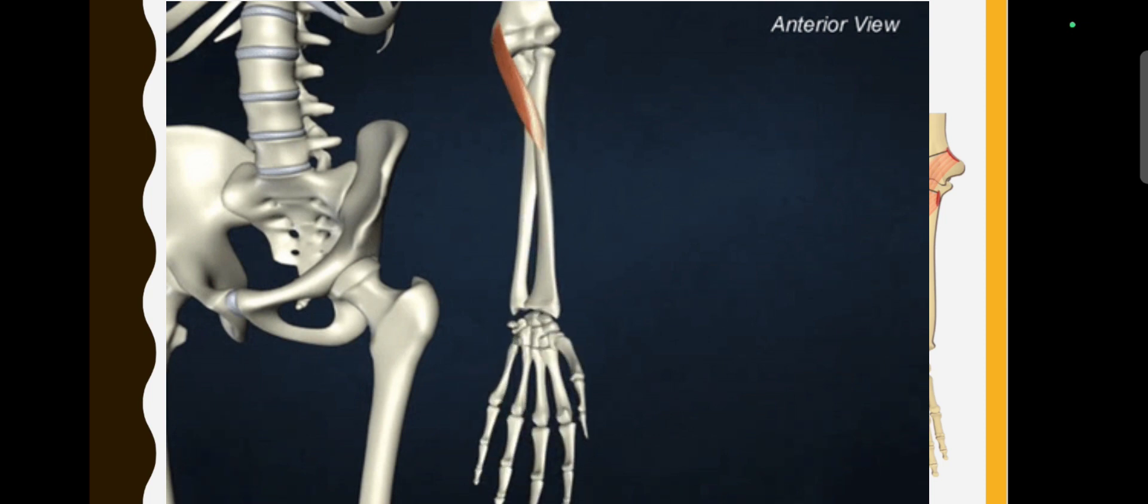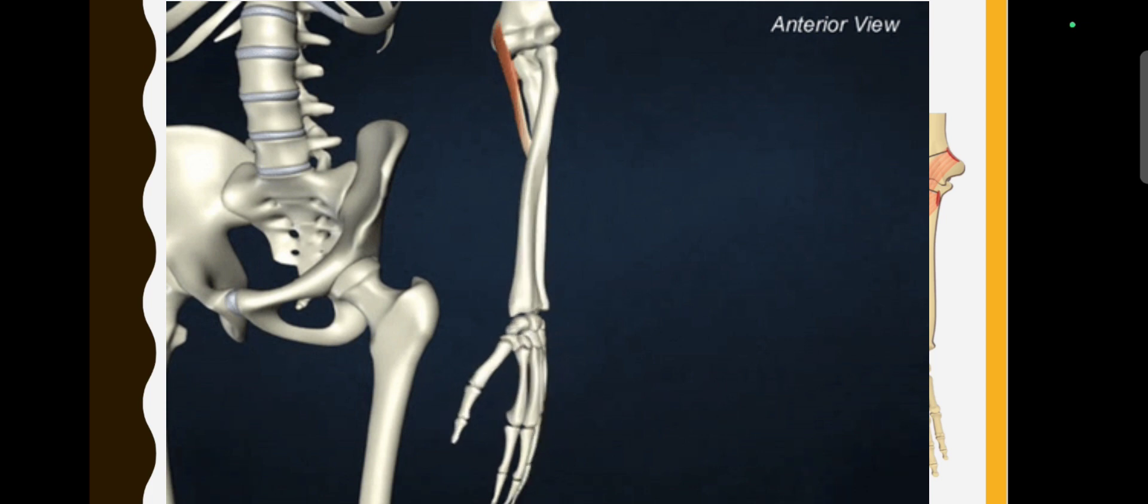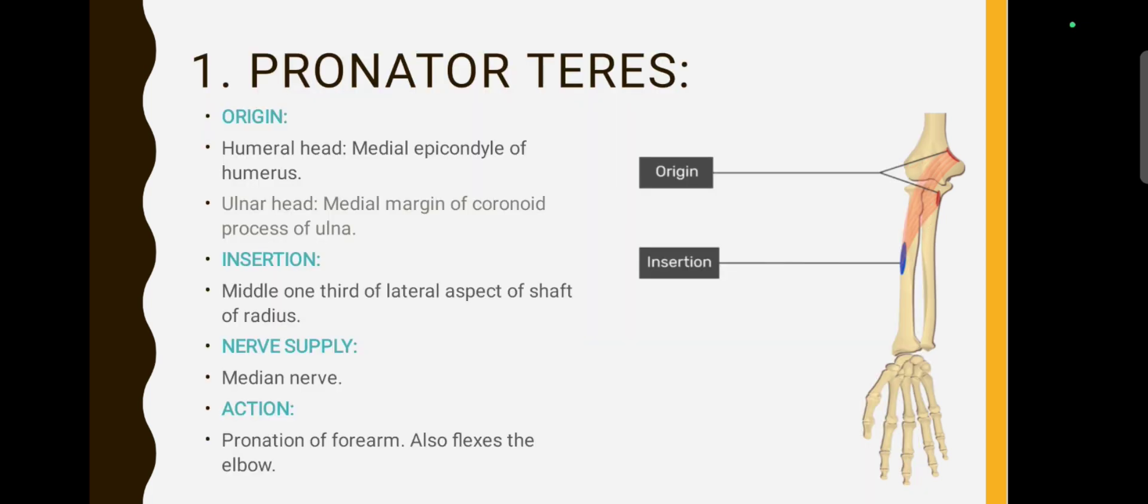When we are doing flexion movement at the elbow joint, it is also helping out. So the two functions of pronator teres are pronation and also helping in the flexion of the elbow.